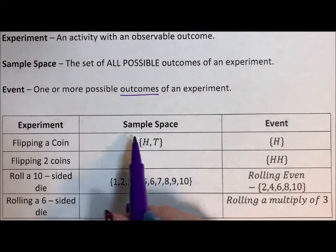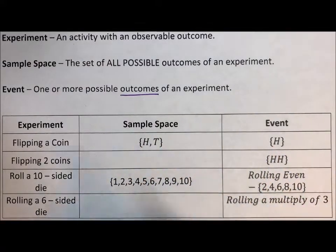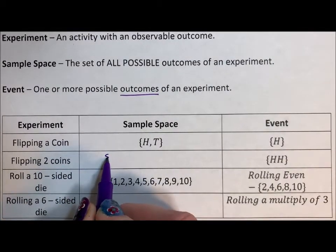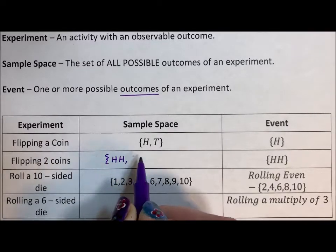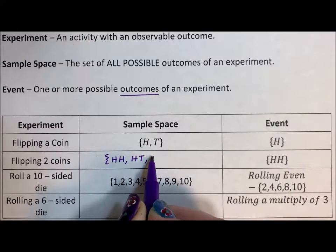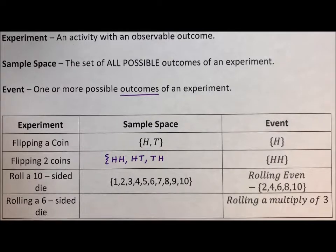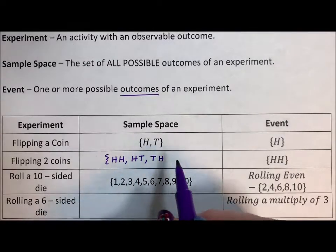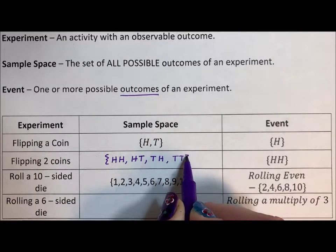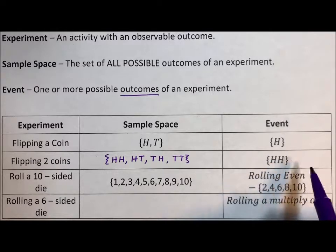So if you're flipping a coin, the sample space is just heads or tails, and one of the events could be heads. Flipping two coins — this is one that students sometimes get wrong because we have two heads, heads then tails, tails then heads. Sometimes students think that's one event, but it's actually two. Think of it as a penny and a quarter: the penny could land heads and the quarter tails, or the penny tails and the quarter heads. You could also think of it as order: first heads then tails, or first tails then heads — two different events — or tails tails. So we have four different elements in our sample space, and one event would be having heads come up twice.